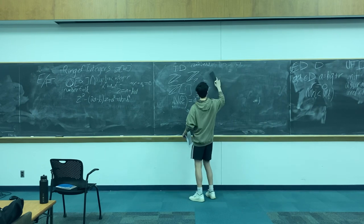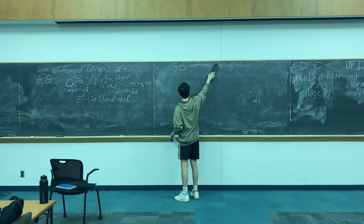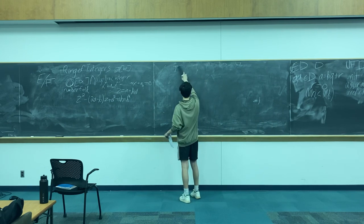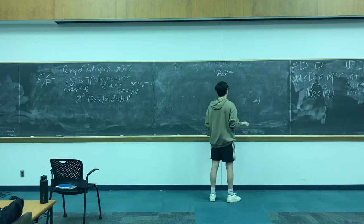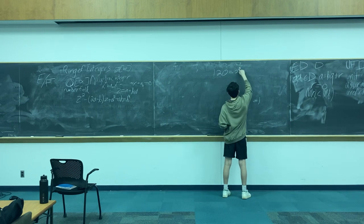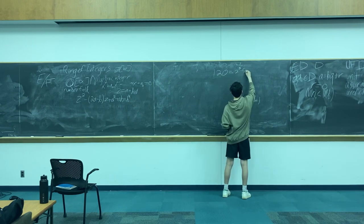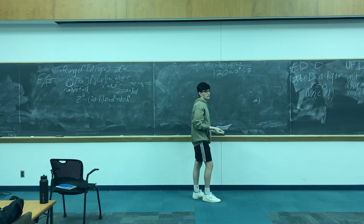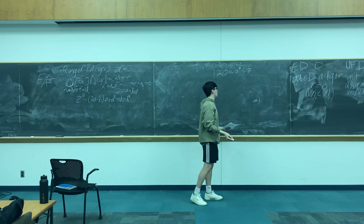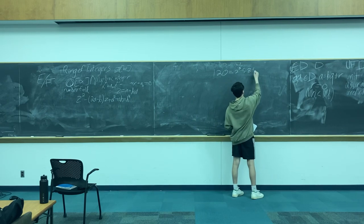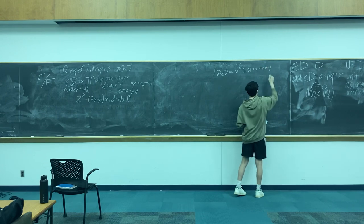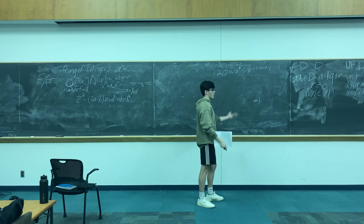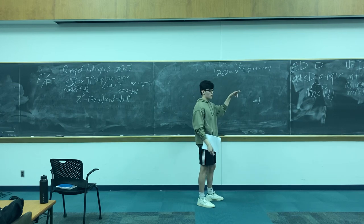Let's do another example. Take 120 in the integers: 120 equals 3 times 40, or 2³ times 5 times 3 — this is the prime factorization. However, what if I say times 1, times negative 1, times negative 1? In the integers, we take it for granted — obviously we don't include 1 or negative 1 — but we need to formalize that notion for larger sets. That's what a unit is: a unit is essentially like 1 or negative 1 — an element that has a multiplicative inverse within the set.